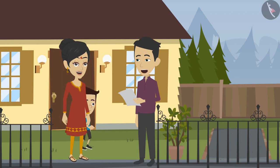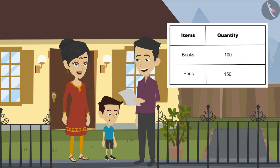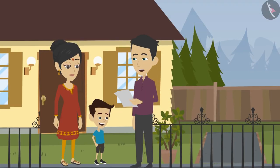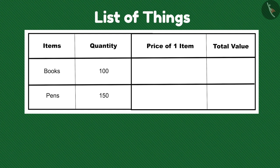Dad, how did you find out how much money is needed to start a stationary shop? Can you tell me? Son, before starting any work we need to make a list of things we need for that work. Using that list we will be able to identify how much money is needed to start the work. For instance, I made this list — I have entered the number of items I need, but I need to enter the amount. Then I will get to know how much money is required to buy the things.